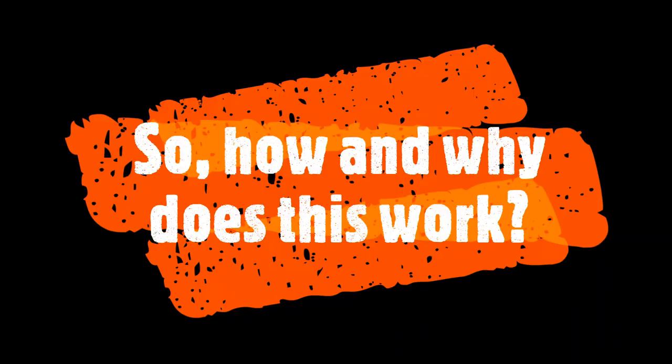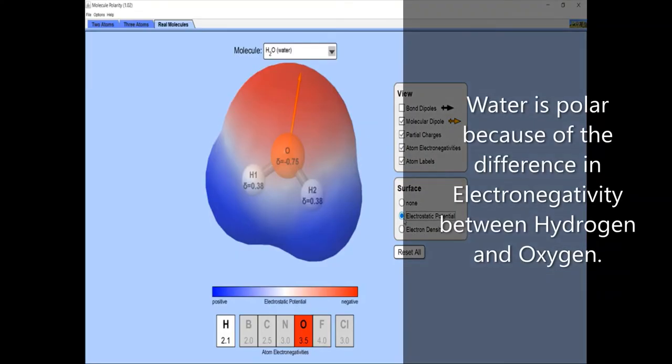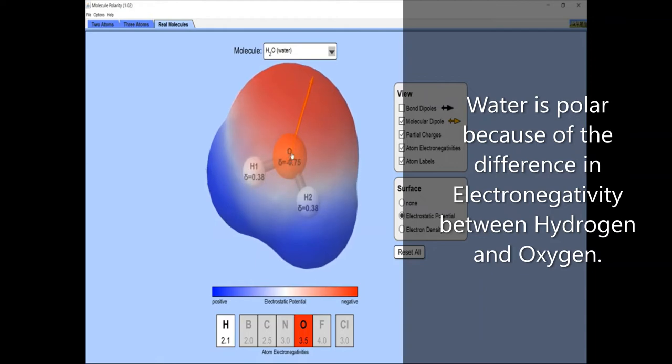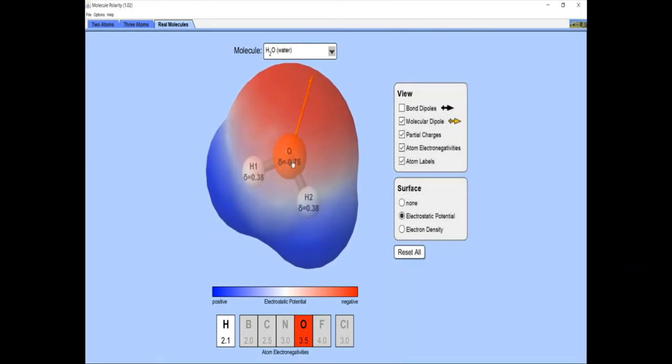So how and why does this work? To answer this question, we need to understand that water is a polar molecule because of the difference in electronegativity between hydrogen and oxygen. This means that the electrons are shared, but shared unevenly between hydrogen and oxygen.